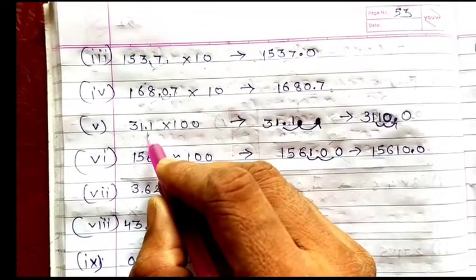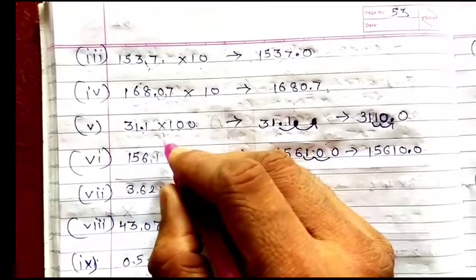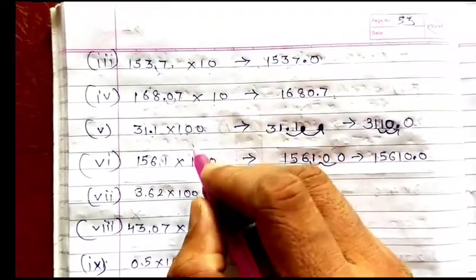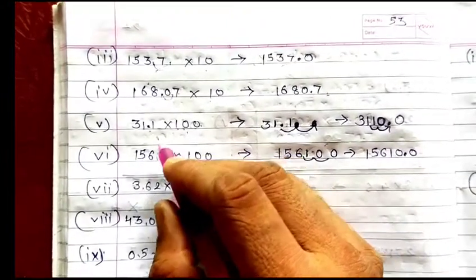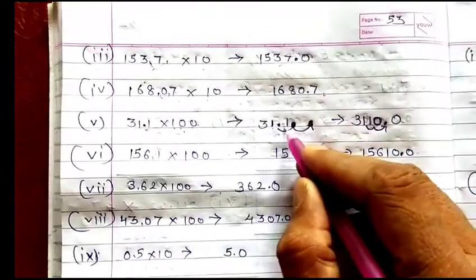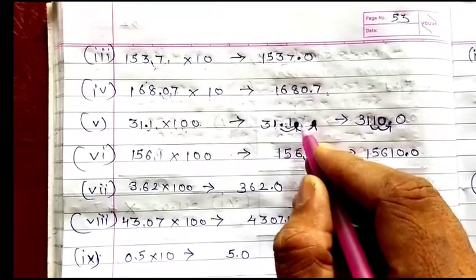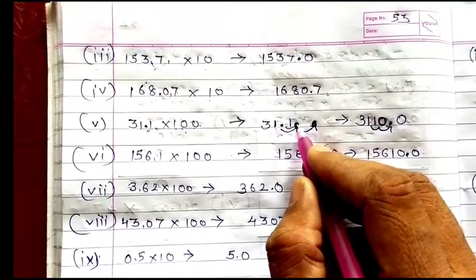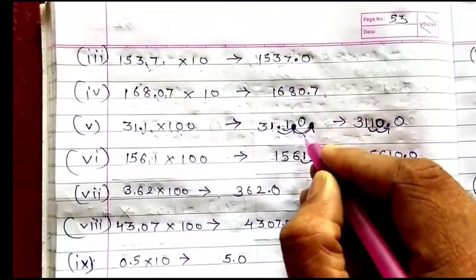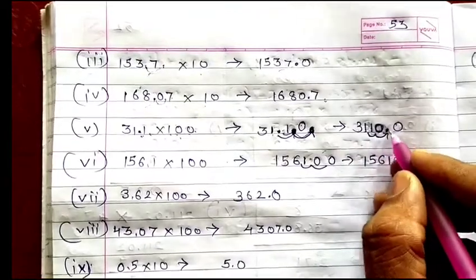Then 31.1 into 100. When multiplying with 100 you move the decimal two places to the right. While multiplying with 10 you move one digit; with 100 you move two digits. So for 31.1, move the decimal once to get 311, then once more — since there is nothing there, place a zero — it becomes 3110.0.